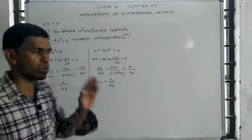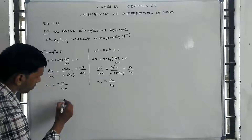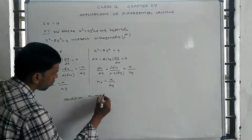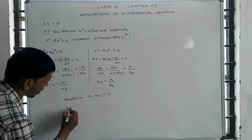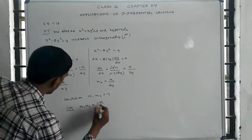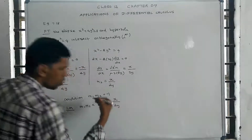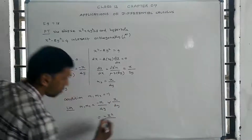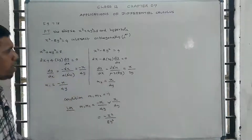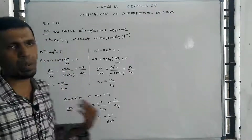Now m1 into m2 equals minus x divided by 4y, multiplied by x divided by 2y, which gives minus x squared divided by 8y squared. To verify the orthogonality condition m1 into m2 equal to minus 1, we need to find the values of x squared and y squared by solving the two curve equations simultaneously.